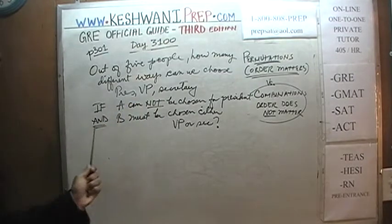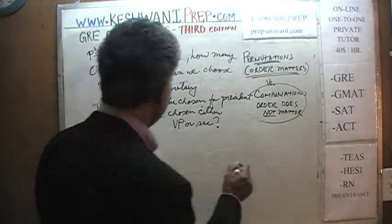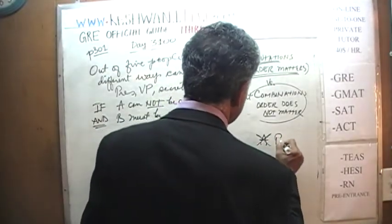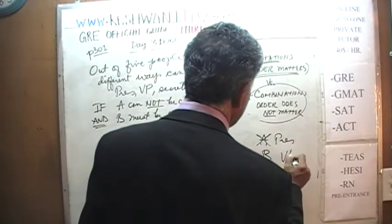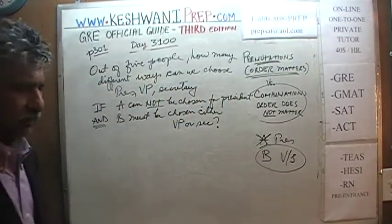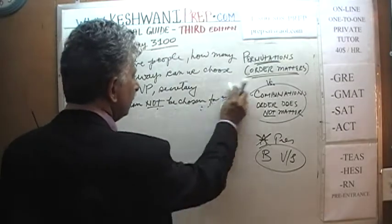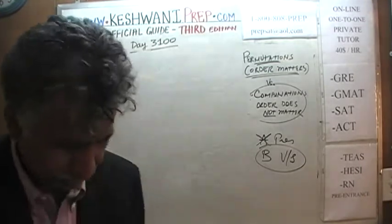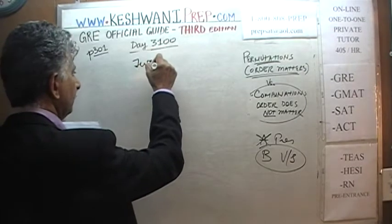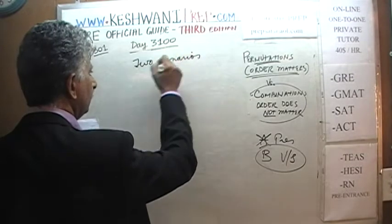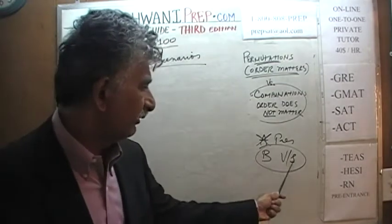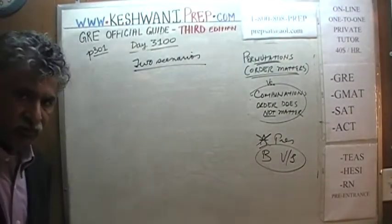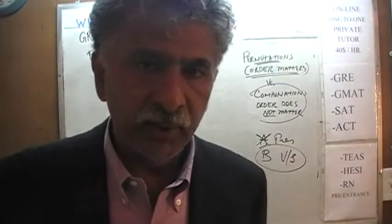Here we go. Remember: A cannot be President, and B has to be either Vice President or Secretary. There are two different scenarios because B is happy to be either Vice President or Secretary. In the first scenario, B would be Vice President; in the second scenario, B would be Secretary. We do them separately and then add up the two totals. There are two separate sets of permutations.